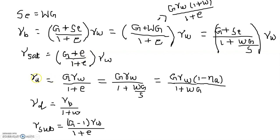For dry density, the water content W equals 0 and saturation S equals 0, so the Se term becomes 0. Therefore, dry density equals G times gamma W divided by (1 + e). Then the bulk density is equal to (G + Se) divided by (1 + e) into gamma W, where Se equals Wg.